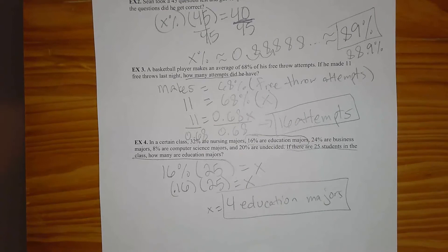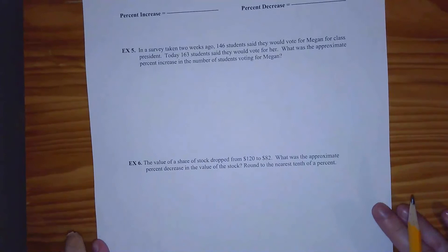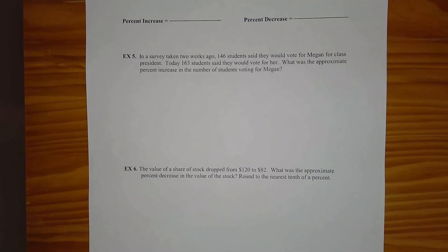Hopefully you see from these four examples how to find those 'is,' 'of,' and 'what' keywords to make an equation and then solve it. The next thing in this section is percent increase and percent decrease. You'll know which to use because it will say it in the problem — 'what is the percent increase?' or 'what is the percent decrease?' — so those are your important keywords.